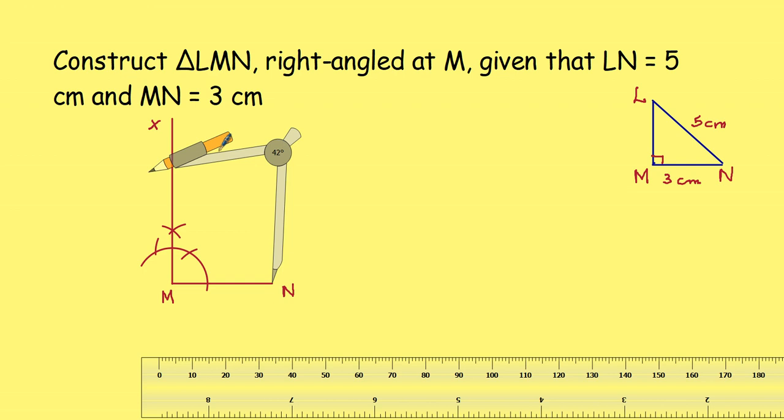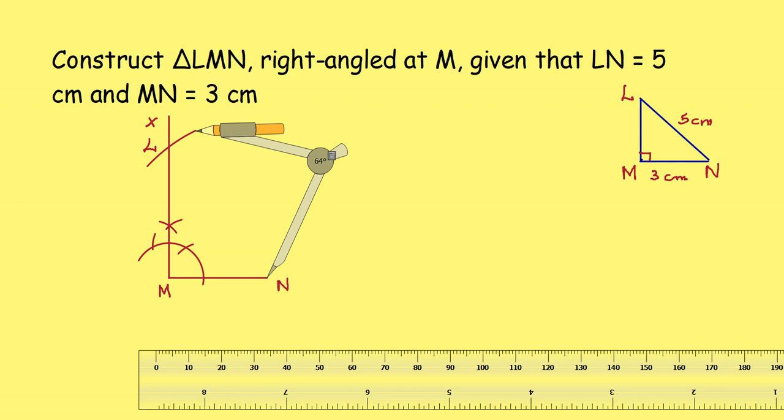This intersecting point will be L. So this point we can take as L. Now join LN. You will get the required triangle. So join LN. Triangle LMN is the required triangle.